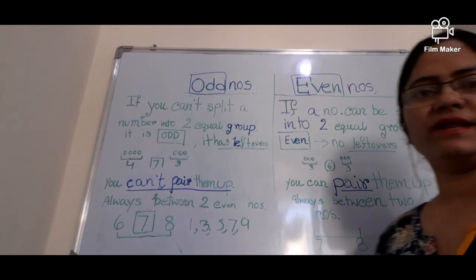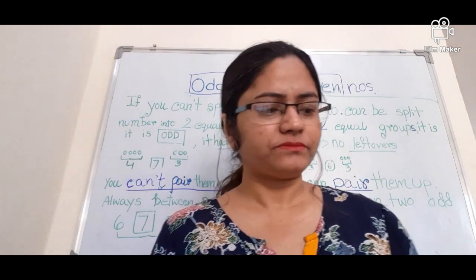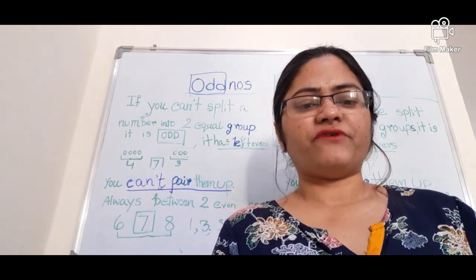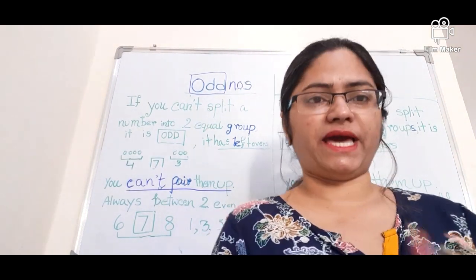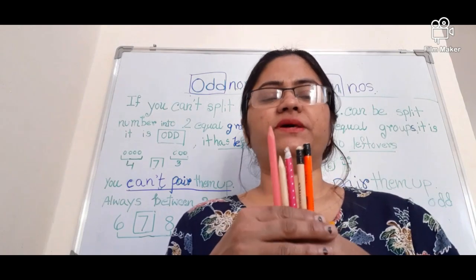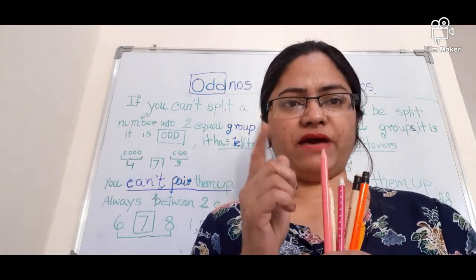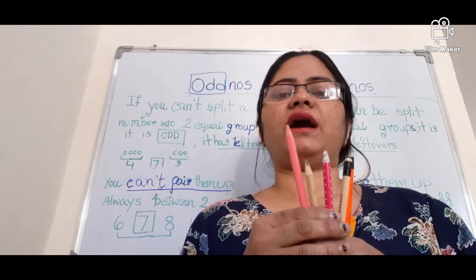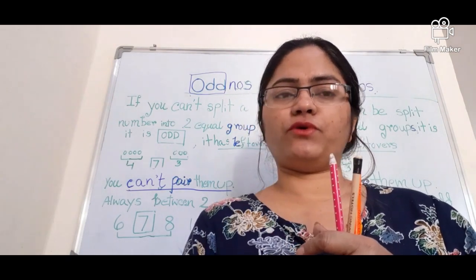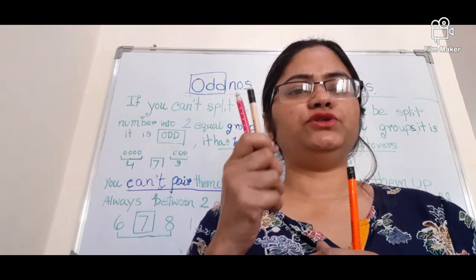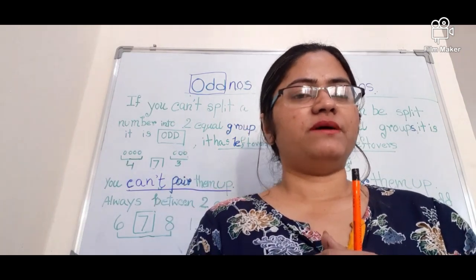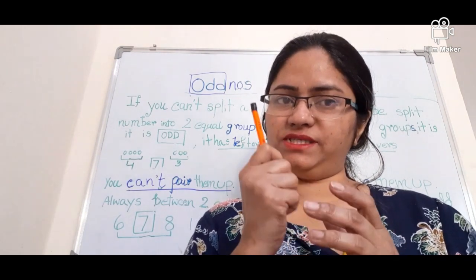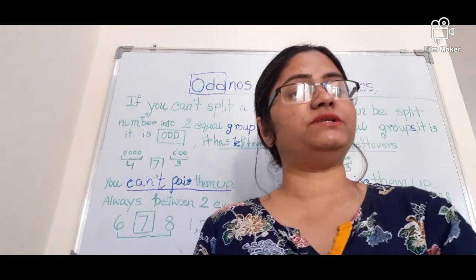It has leftovers. What does that mean? If I take five pencils in my hand — one, two, three, four, five — I have to give them among two persons. I can give two pencils to one person and two pencils to another person, but in that case I have one pencil left over. That means it is called a leftover, and that means five is an odd number.